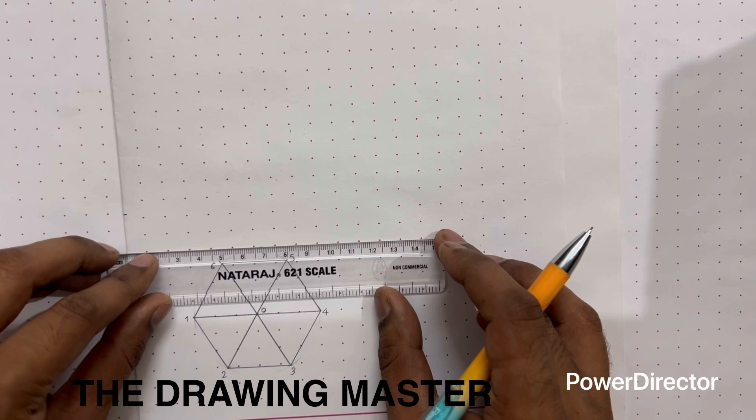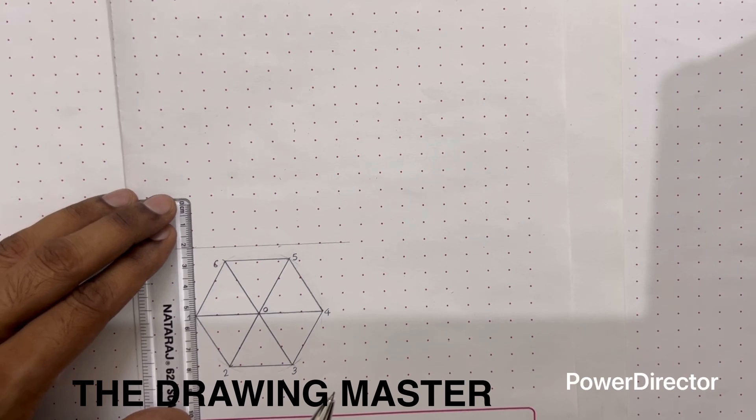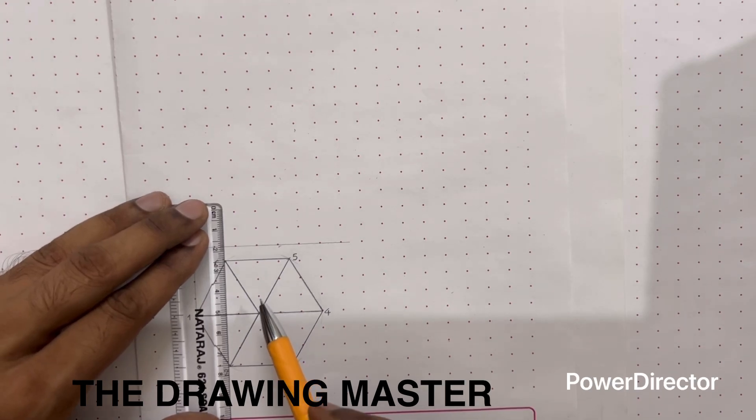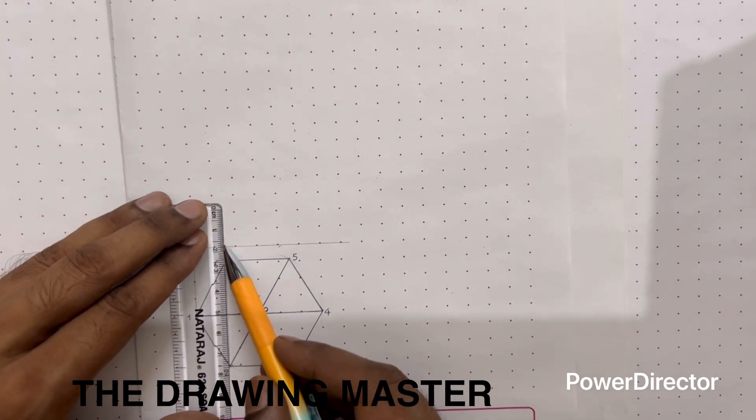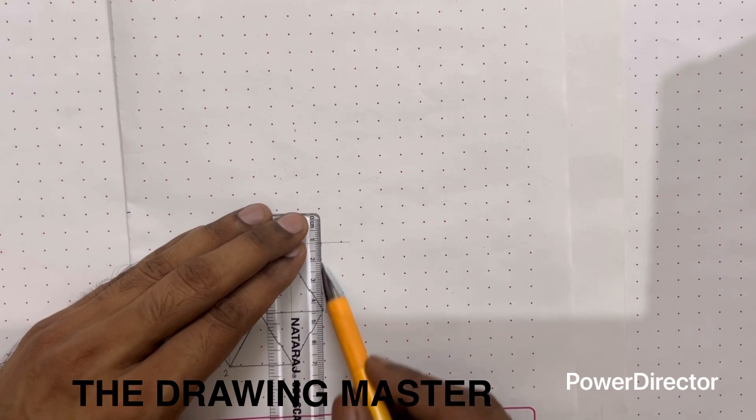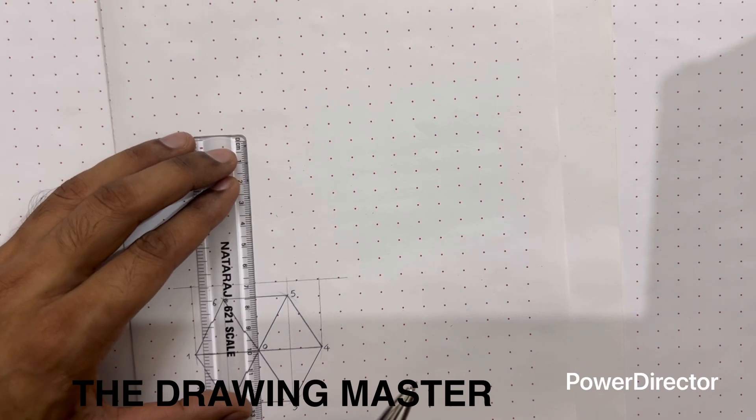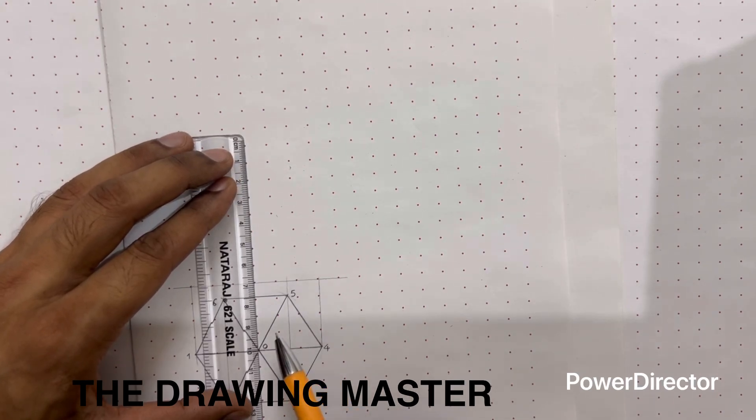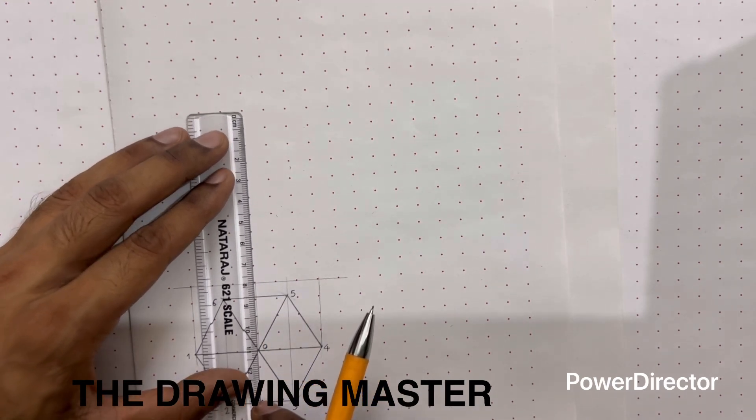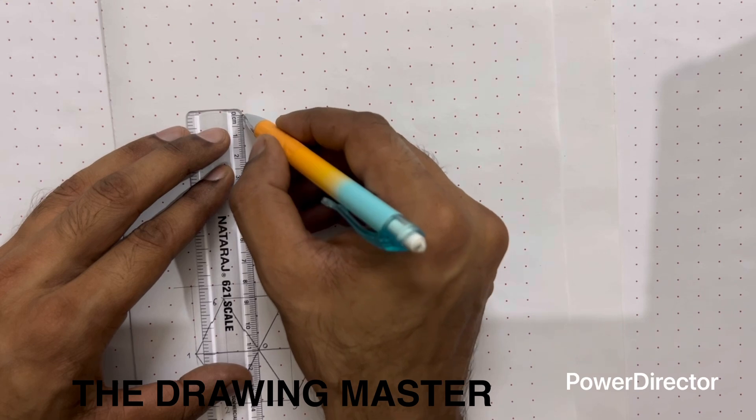Let's take the reference line now. Take the projection - this is the projection two-six, this is five, and this is four. Next we have to create the height of the pyramid. Take the projection from the centroid. The height of the pyramid is 80, so from the reference line we have to draw a centerline of 80.